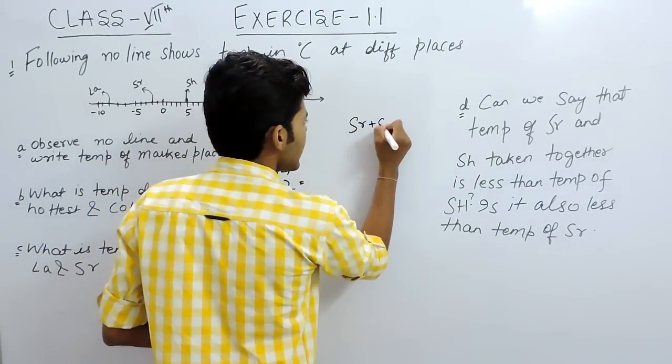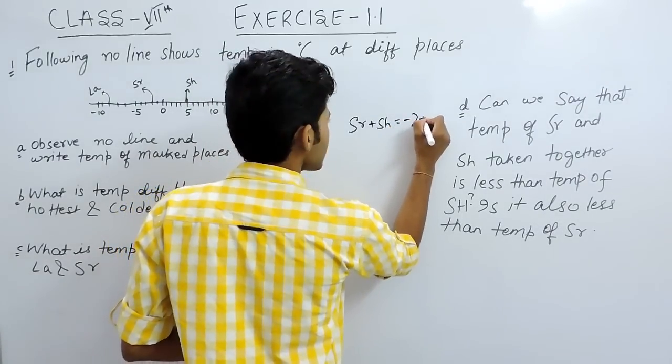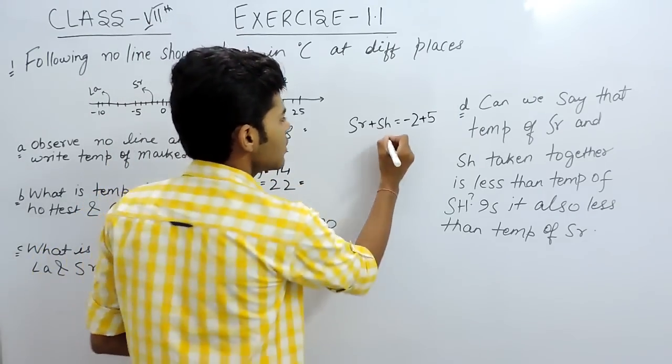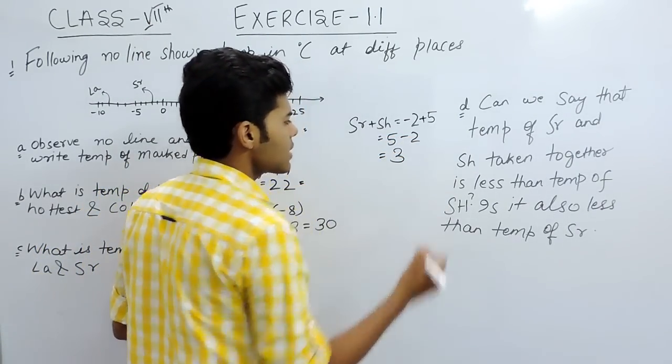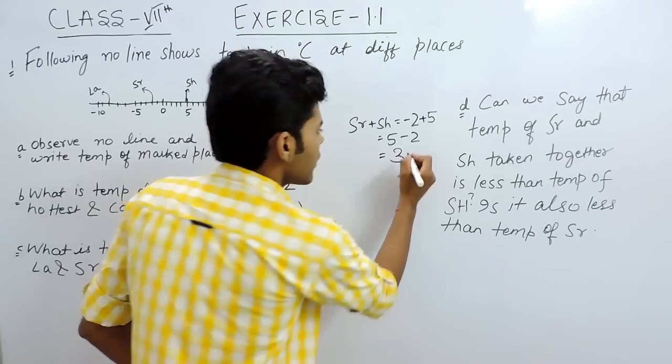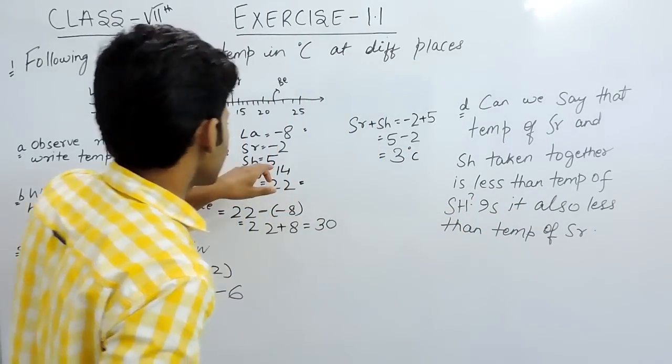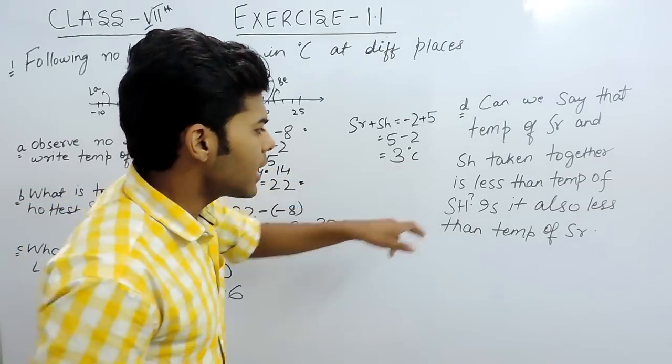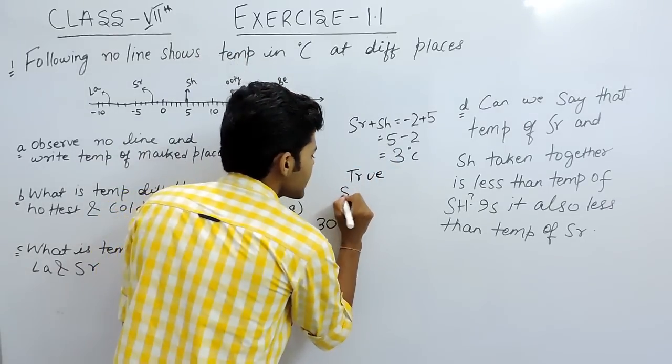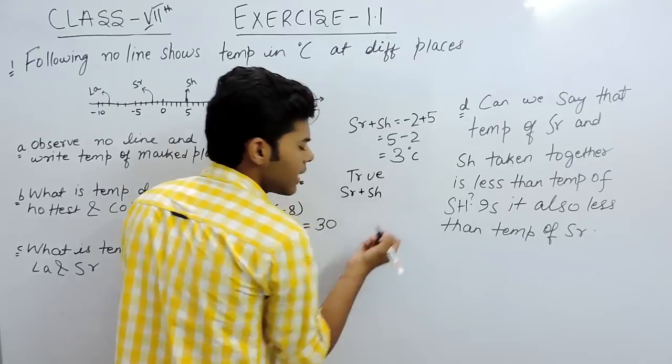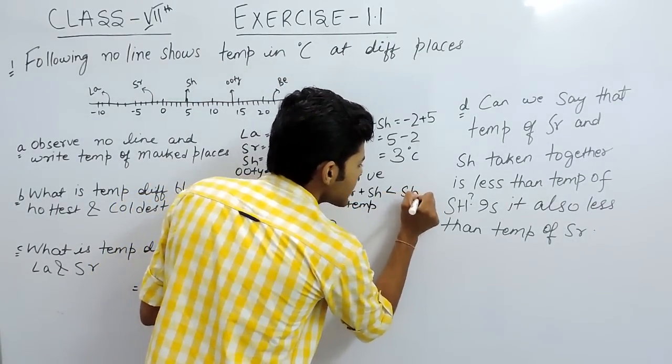I am doing it here. SR plus SH will give us minus 2 plus 5. So, you can write this as 5 minus 2 and we all know that this will give us 3. So, this 3 degree centigrade is less than SH. SH is 5. So, this statement is true. That SR plus SH temperature is less than SH.